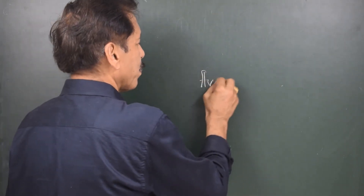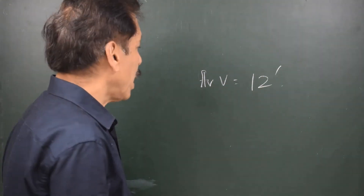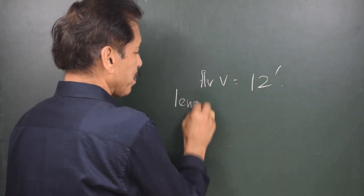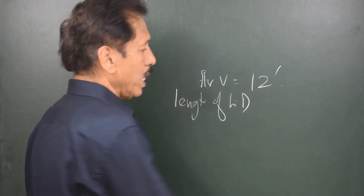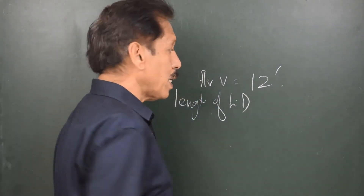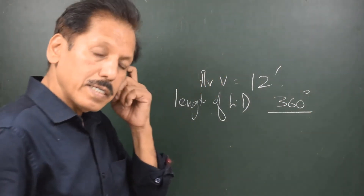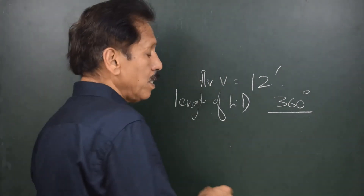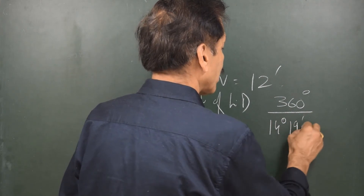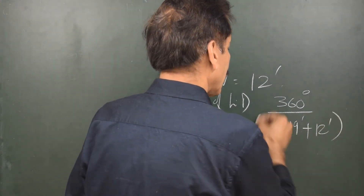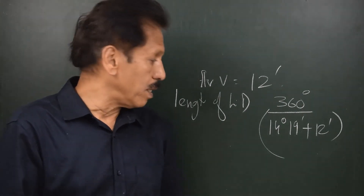Sometimes in the case of the Moon you might be asked: if the average V equals 12 minutes for the day, find the length of the lunar day. The length of the lunar day will be 360 degrees divided by the rate of change of GHA of the Moon, which is 14 degrees 19 minutes plus 12 minutes. Whatever duration you get will be more than 24 hours — that is the length of the lunar day.